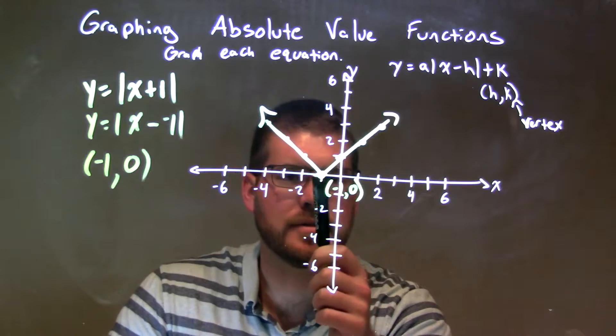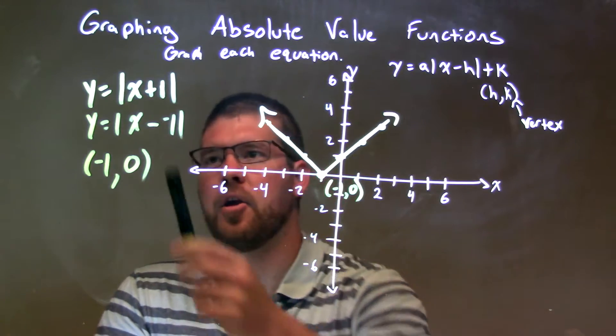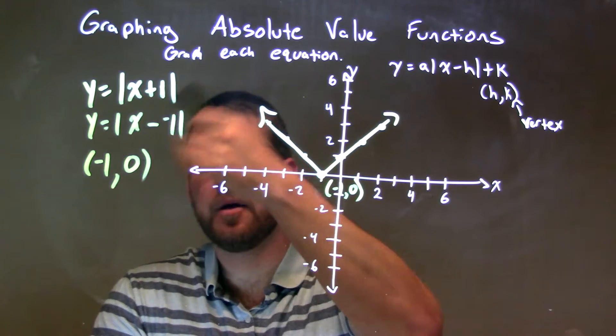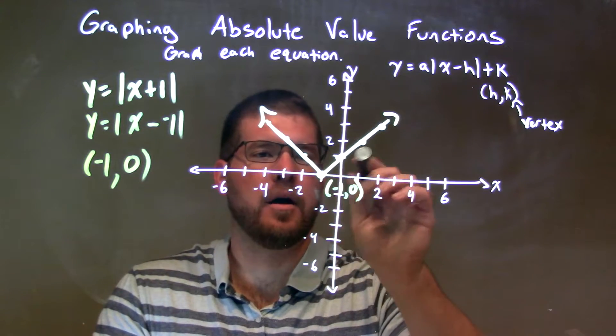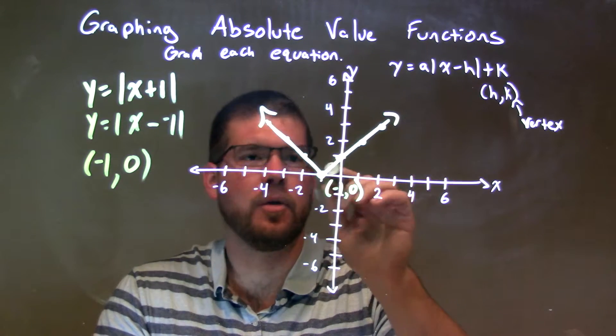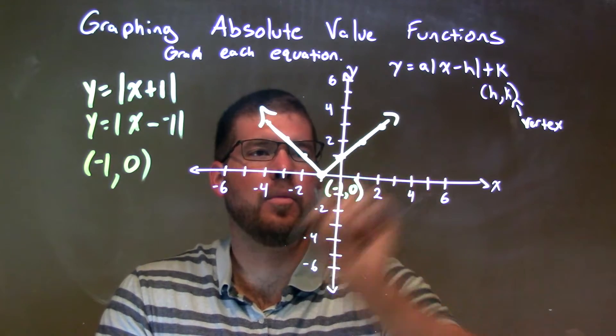Our a value out front is a positive 1. We don't really write it there, but there's a 1 there. So our slope is, we go to the right with slope 1: up 1 over 1, up 1 over 1, up 1 over 1.